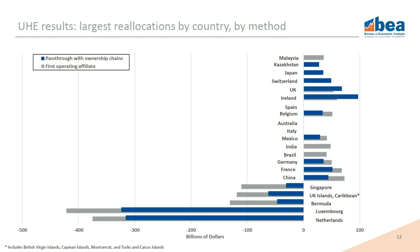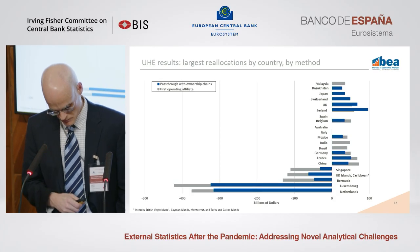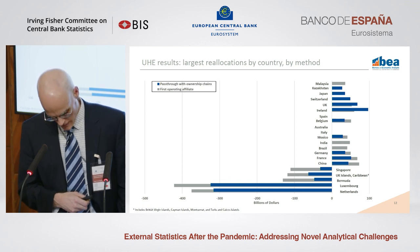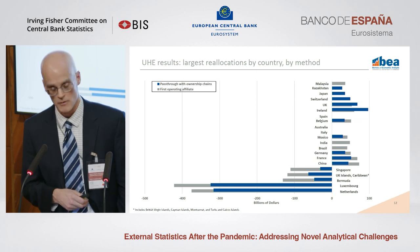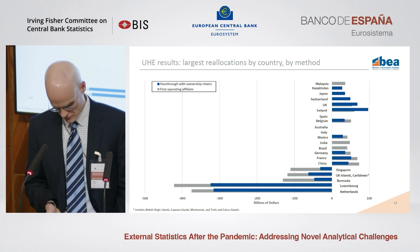This slide adds the results of the first operating affiliate method in gray — these are the first non-holding companies in the ownership chains. Many of the largest reallocations by country are the same as from the pass-through method, but several appear for the first time, meaning they were not in the top 10 for the other method.